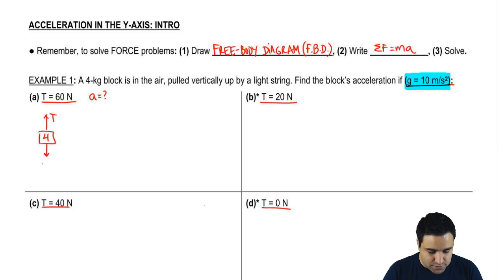Now, in all of these, there's also obviously going to be an mg pulling down, and gravity, we're using 10, so this is 40 going down.